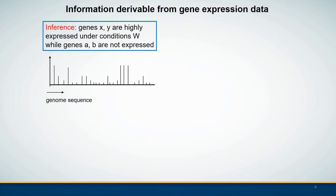Let's see what kind of information can be derived from gene expression data. By observing chip data, one can infer which genes are highly expressed or not expressed — in general, the relative expression levels of all genes.